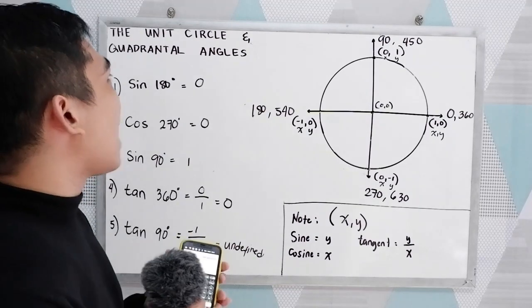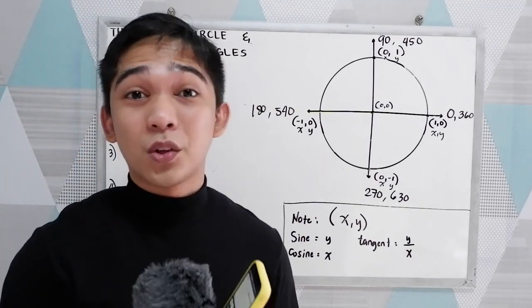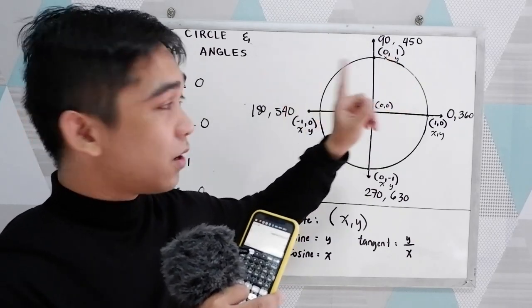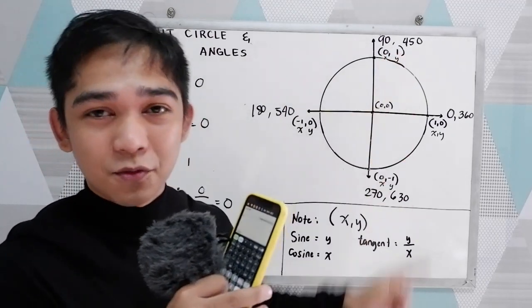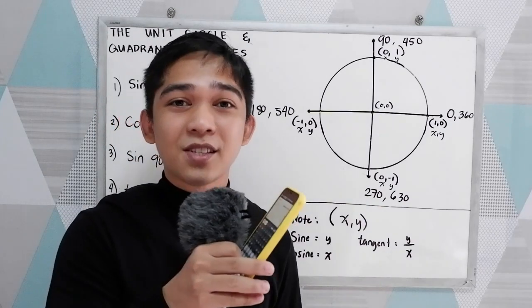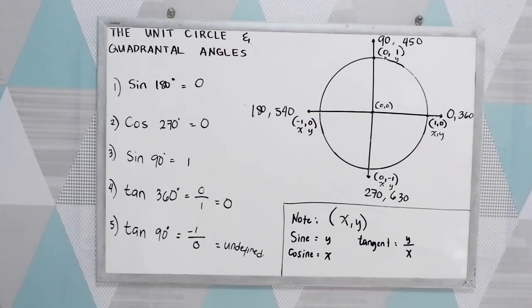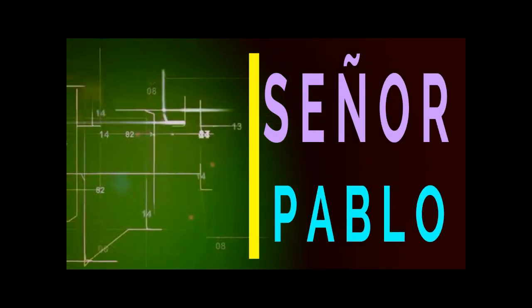So that's the application of the unit circle and the quadrantal angles. We had a mistake in our lecture a while ago — this must be 0 and positive 1. Thank you for watching Senior Paolo TV.